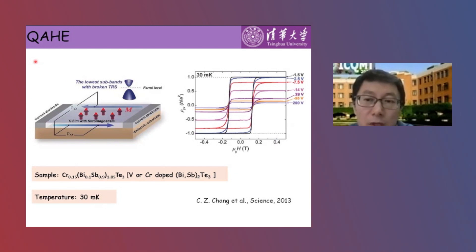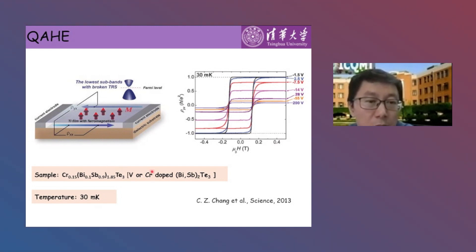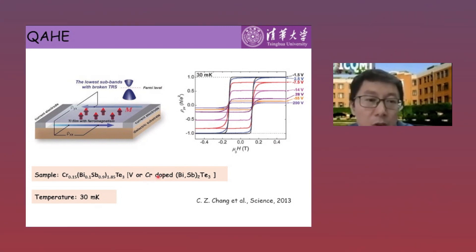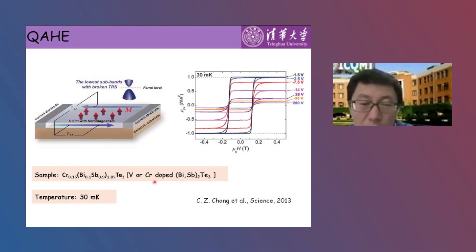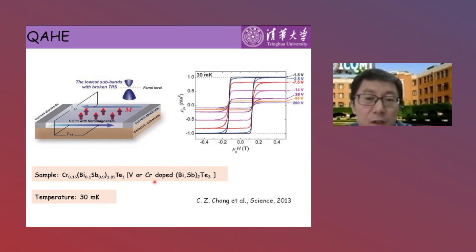Unfortunately, it is not easy to realize magnetic topological insulators. Taking the quantum anomalous Hall effect as an example, it was originally realized in vanadium or chromium-doped bismuth antimony telluride. The observation requires both fine-tuning of sample composition and ultra-low temperatures, making experimental demonstration extremely difficult. It is thus highly desirable to search for stoichiometric topological insulators with intrinsic magnetic ordering.